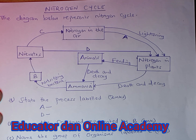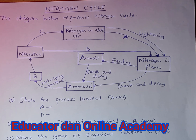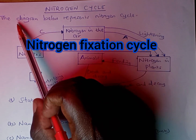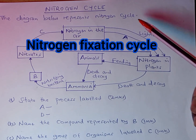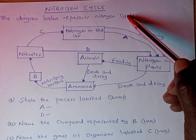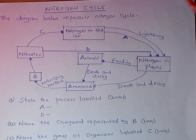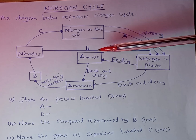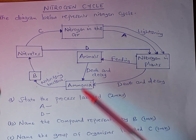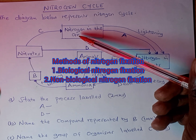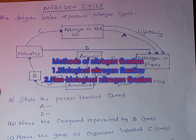Welcome and thank you for joining us. We are looking at a question on nitrogen cycle. The question reads: the diagram below represents the nitrogen cycle. The nitrogen cycle refers to the cycling of nitrogen and its compounds in nature. We have a flowchart that gives us a summary of how nitrogen moves from the air to the soil and back to the atmosphere.